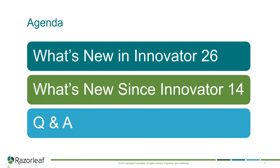Thanks, Rodney. So like Rodney mentioned, first things first, our goal here is to go over what's new in Innovator 26. And then we're going to go a different direction with this Tech Tuesday. We've been getting a lot of questions from people interested in upgrading to a newer version of Eris, so I figured we'd do a good recap of what's been released since Innovator 14 — a nice place for everyone to go back to or learn about new functionality included with their upgrade. So without further ado, let's get into it.